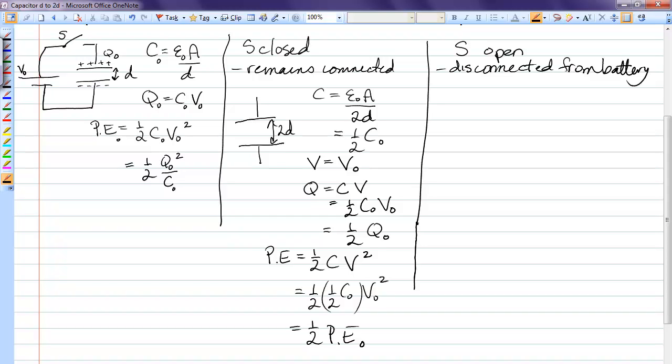So, where did the energy go? The energy went into charging the battery because the charges went from the capacitor onto the battery.